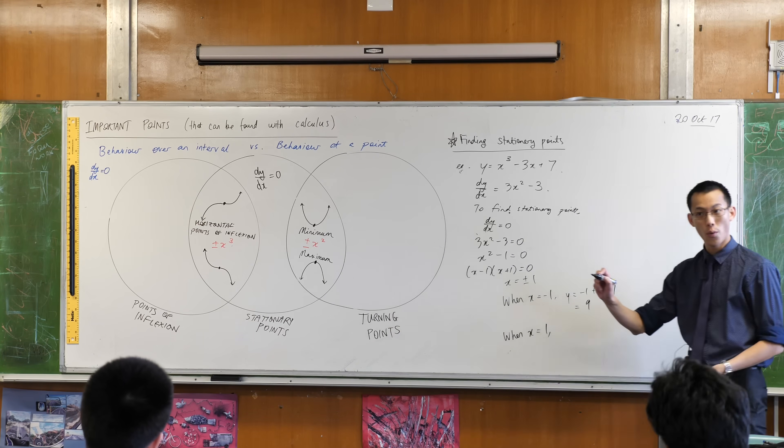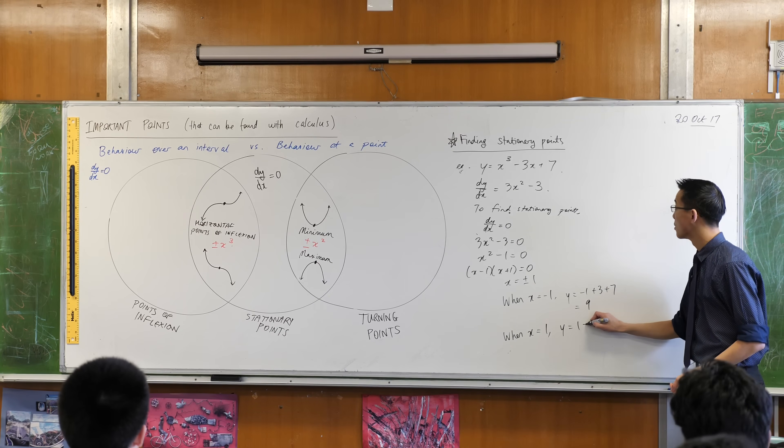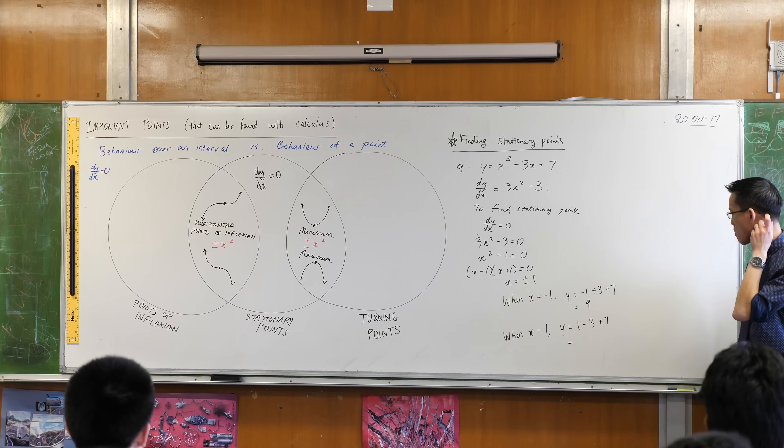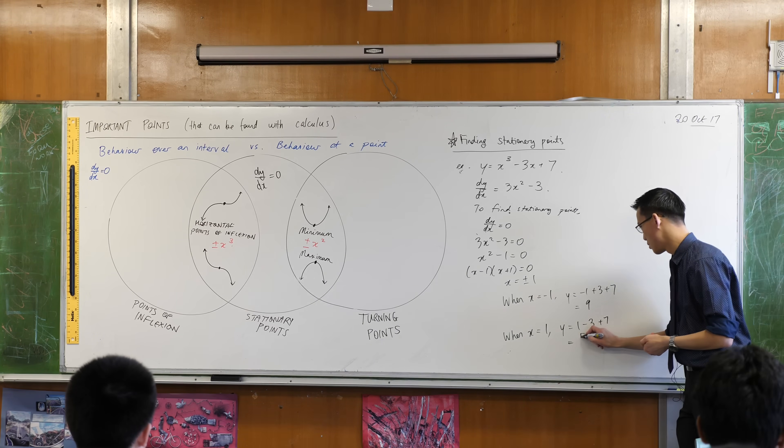I've got a y value that corresponds to that x value but I have another x value to deal with so I'm going to say when x equals 1, y equals, let's have a look: 1 minus 3 plus 7. 5? 5.